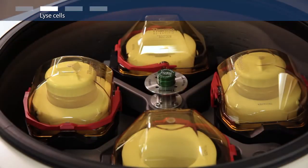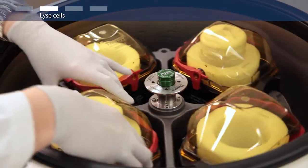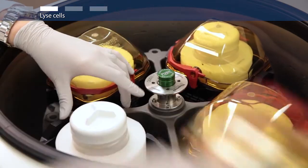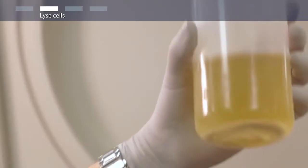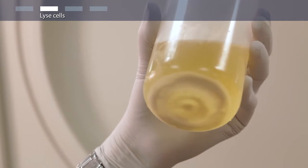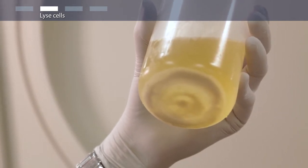To lyse cells from your overnight culture, first harvest the cells by centrifugation at 4,000 times G for 15 minutes at 4 degrees Celsius. Carefully discard the supernatant.